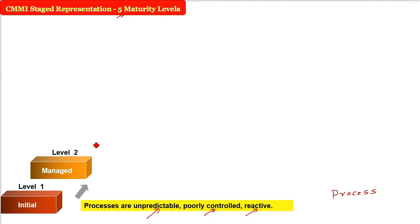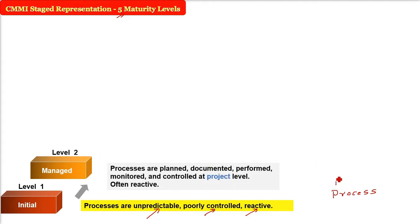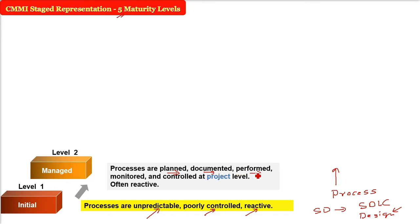Level two is called Managed. To illustrate with an SDLC example: in a waterfall or spiral model, the design phase constitutes a process — all activities and tasks involved. At level two, processes are planned, properly documented, performed as documented, monitored, and controlled. However, this management is only at the project level and is still often reactive.